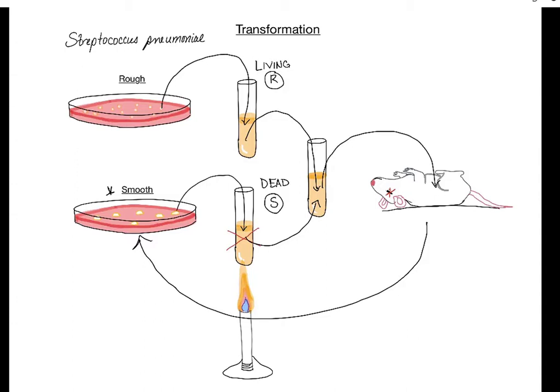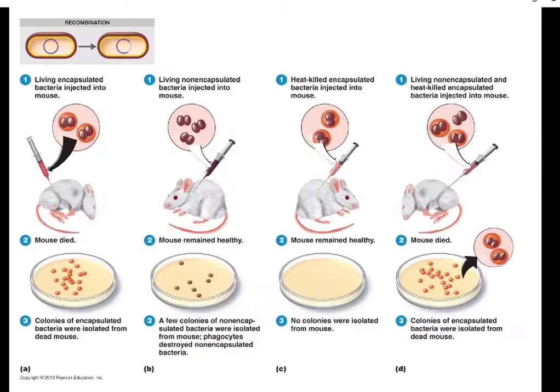We now know that the genetic material is DNA — in 1928 that was not known, but it is known now. We now know that this idea of transformation — where bacteria take up DNA from their environment and incorporate it into their genome — is how they become genetic recombinants. Let's take a look at the image from your textbook that shows the same experiment.